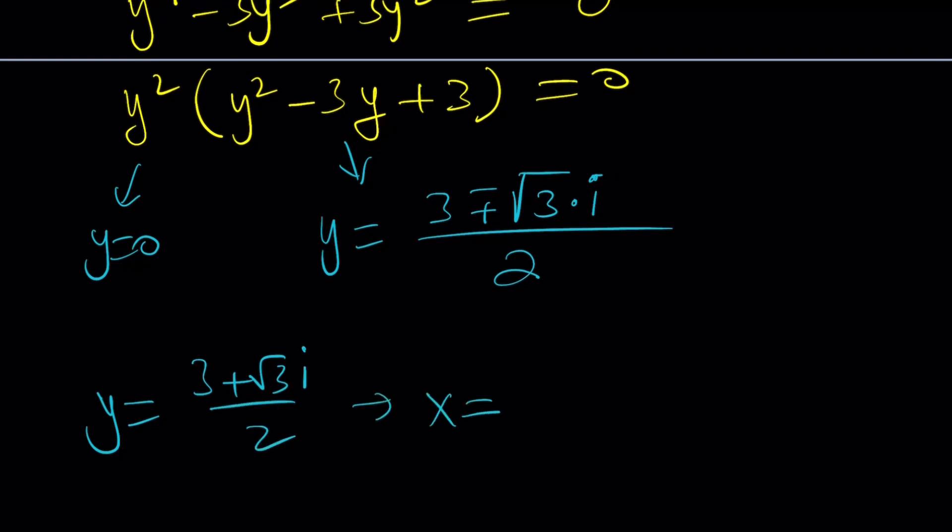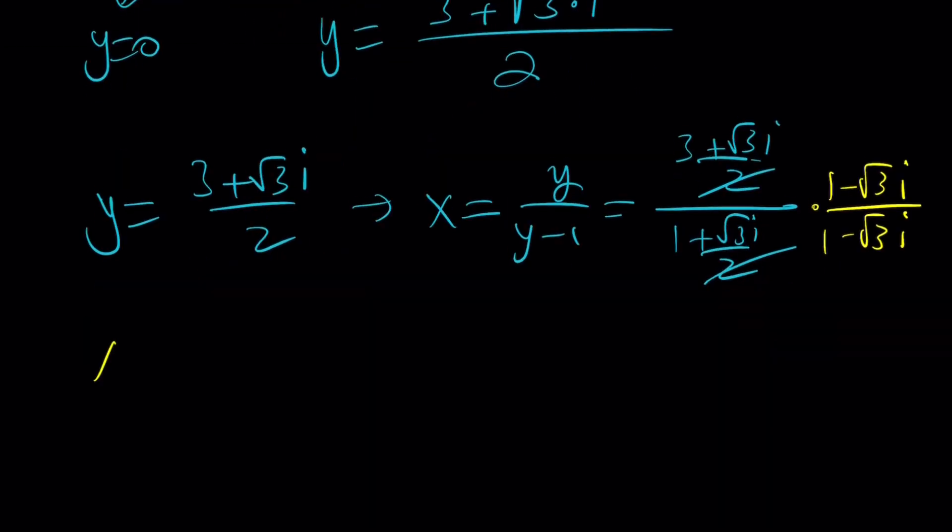From here, x becomes y over y minus 1. Remember that. It's going to be this over 1 minus that. So it's going to be 1 plus root 3 over 2. These two numbers are going to cancel out. I'm going to multiply by the conjugates. And then from here, after distributing everything, we're going to be getting something like this. And that basically turns into 3 minus root 3i over 2.